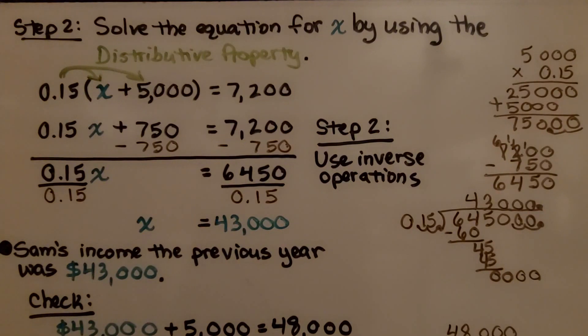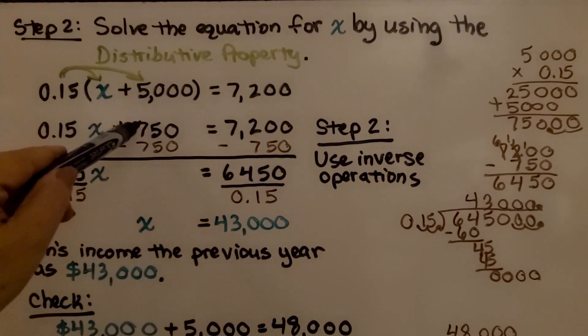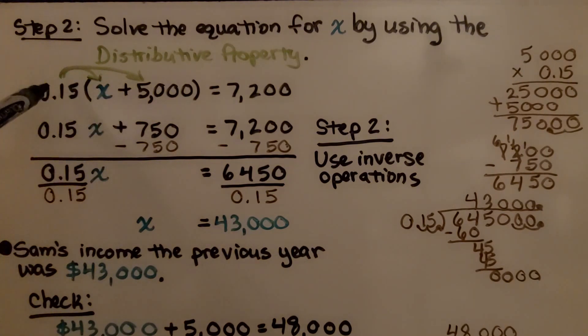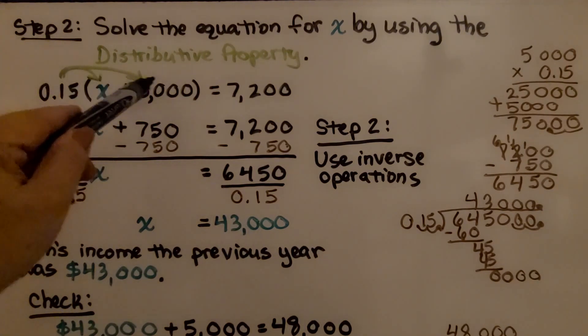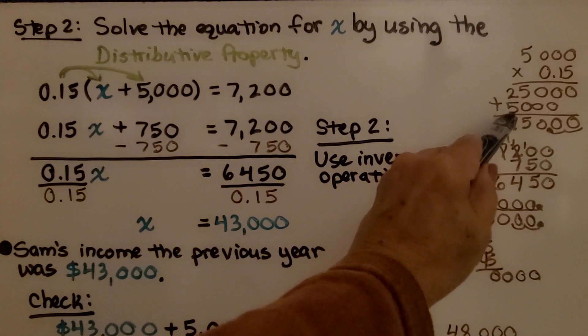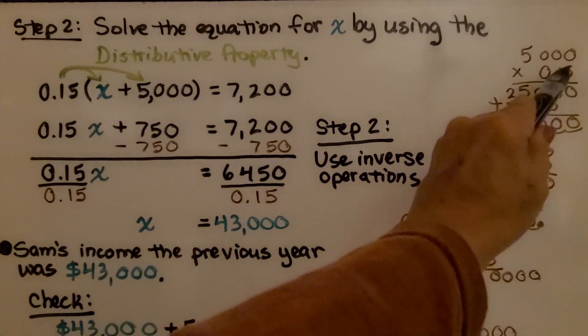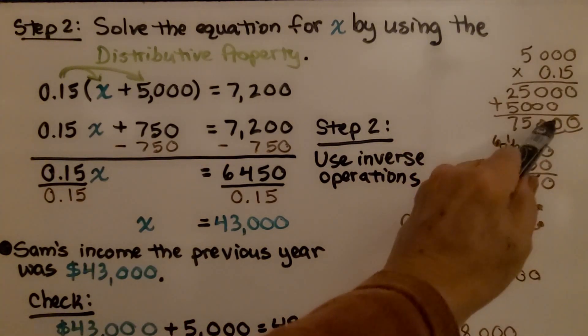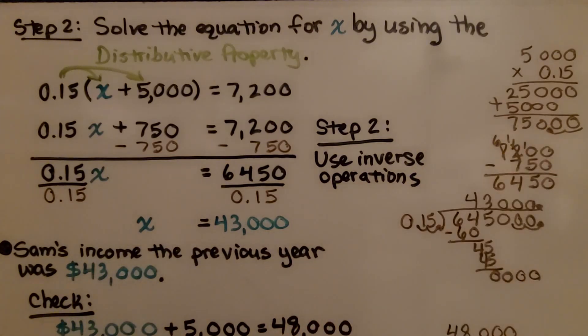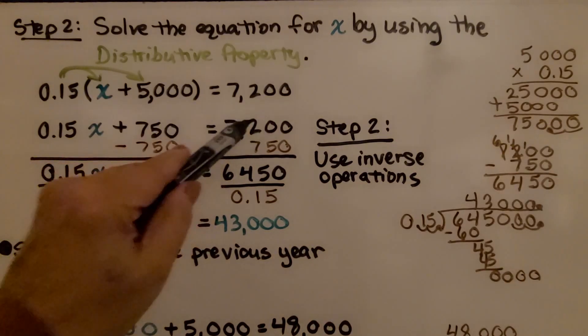For step two, we solve the equation for x by using the distributive property. We've got 0.15 times x and 0.15 times 5,000. That's going to give us 0.15x plus 750. When we multiply 0.15 times 5,000, we get 750. We count two hops in the decimals, that puts us at 750, and it's equal to 7,200.